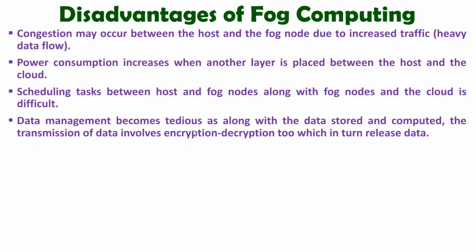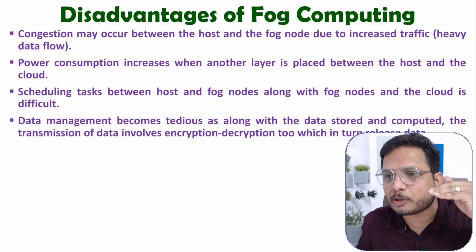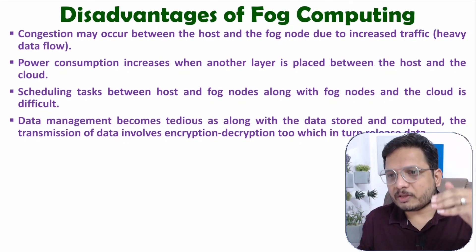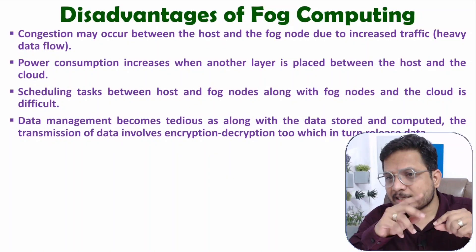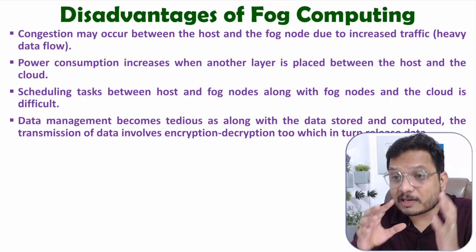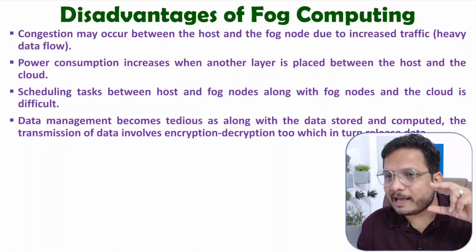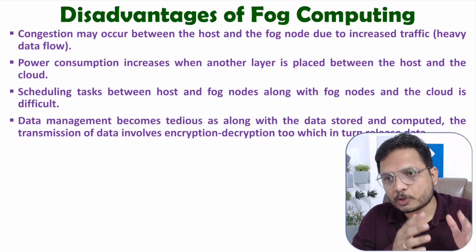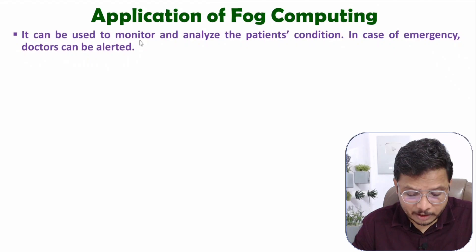Data management becomes tedious because we are adding an additional layer — the fog node — and we need to provide encryption and decryption at that layer. We are adding one additional layer, so every time data transmission happens with the fog node, encryption and distribution are required, making the task more complex. In cloud computing we are not adding this additional functionality, but here with fog computing we must manage all these things.